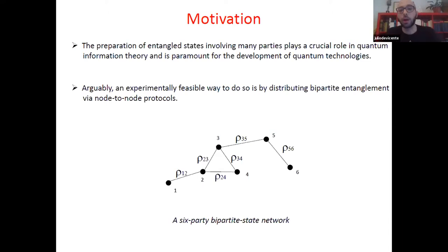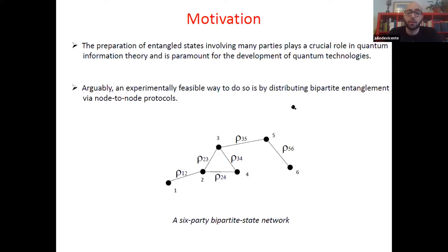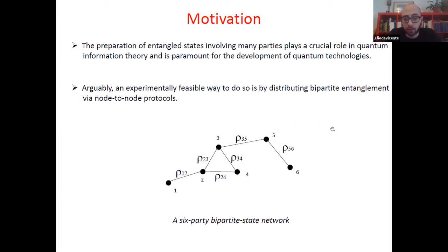The kind of situation I'm going to consider here is arguably an experimentally more feasible way to do this. It doesn't require jointly accessing all parties, but only distributing entangled pairs among different parties. What I call bipartite state networks involves many parties that share bipartite entanglement via a node-to-node protocol, representable by a graph.